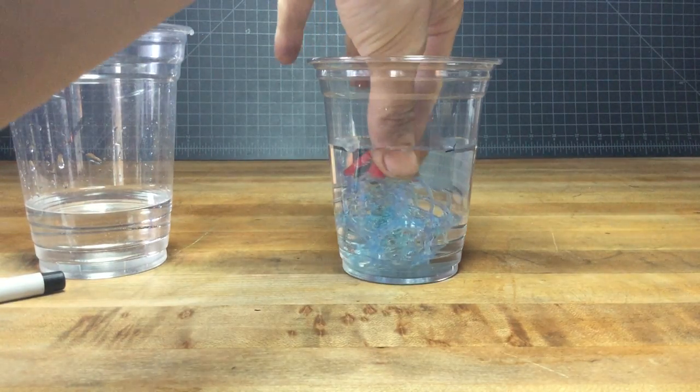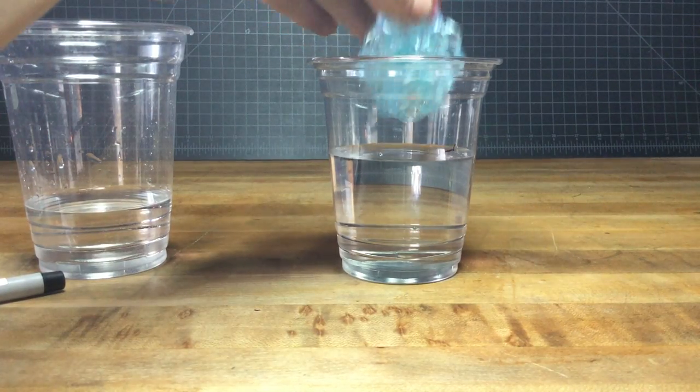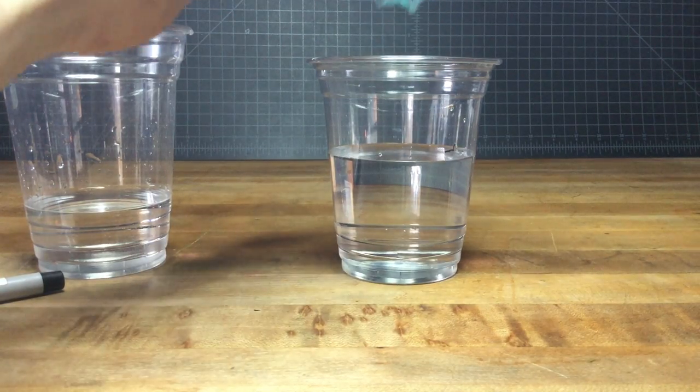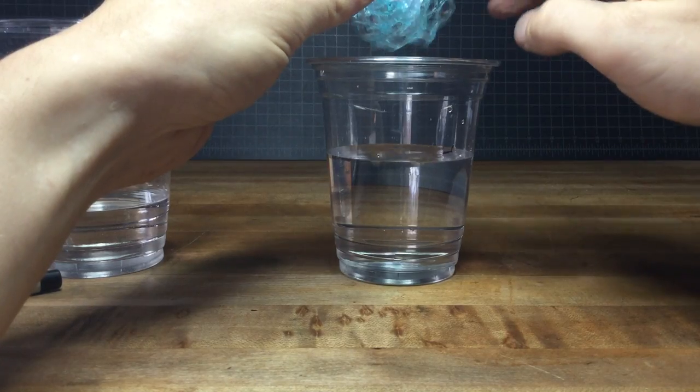So reach in. And this part's important. If you have a lot of surface area, you want to shake any extra water back into your cup, because all that extra water is part of your volumetric calculation.